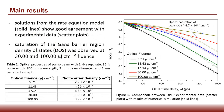Numerical solutions from the rate equation model were then compared with the linearized plot, showing good agreement between the two data sets. Saturation of the GaAs barrier was also observed at the 30 and 100 microjoules per cm² fluences.